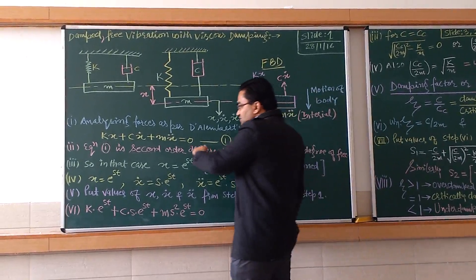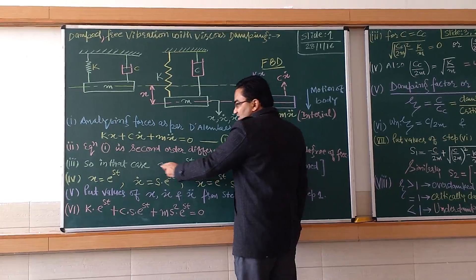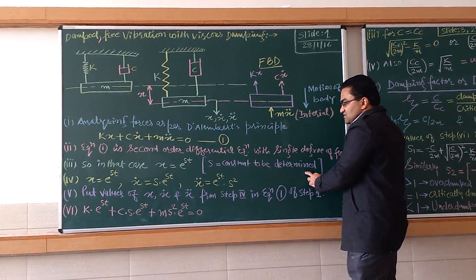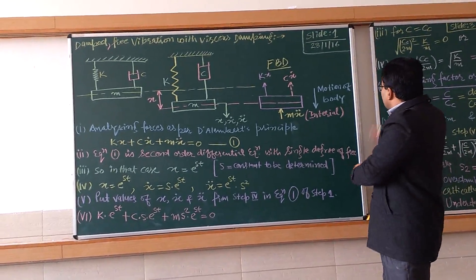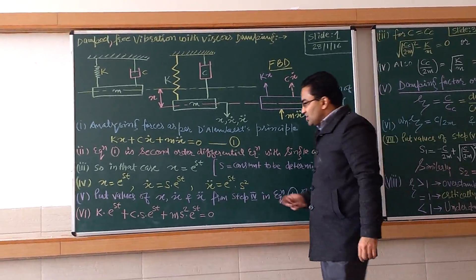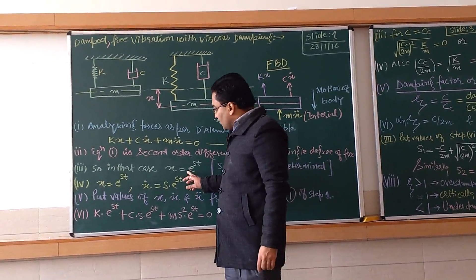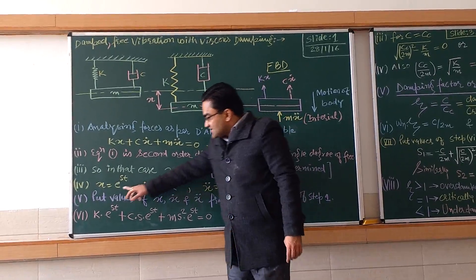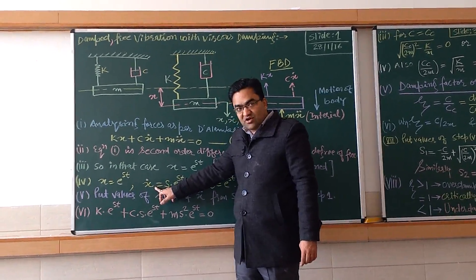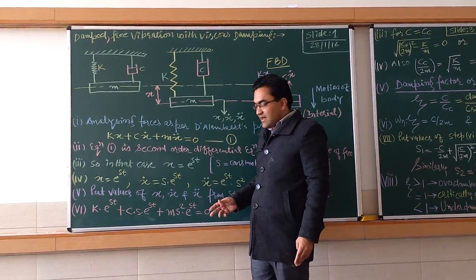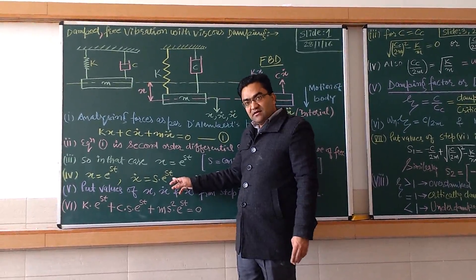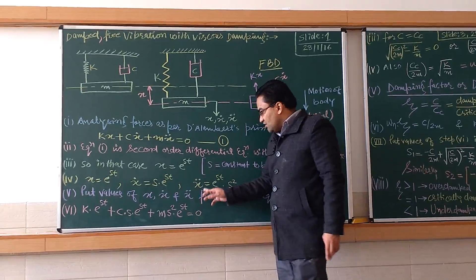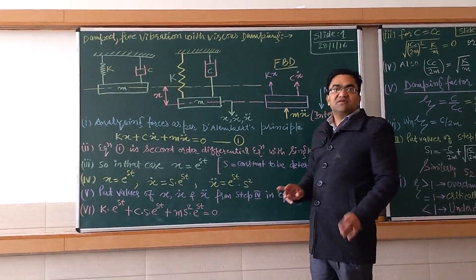The solution of such a second-order equation is given by x = e^(st), where s is a constant to be determined. We differentiate this solution twice: x = e^(st), then x-dot = s·e^(st), and x-double-dot = s²·e^(st).